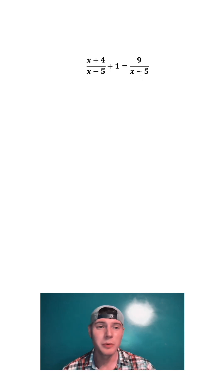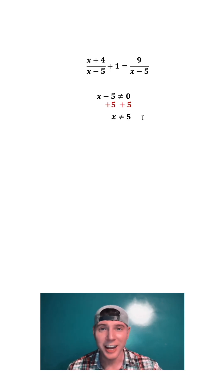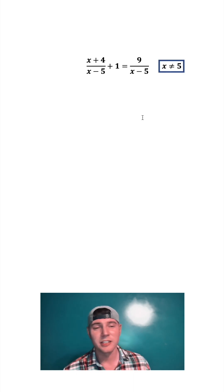First we look at the denominator. We cannot do division by zero, so we have to say that x minus 5 cannot equal zero. Adding 5 to both sides, that means x cannot equal 5. We'll put a box around it - that's a domain restriction. You always want to do that for the first step of these.